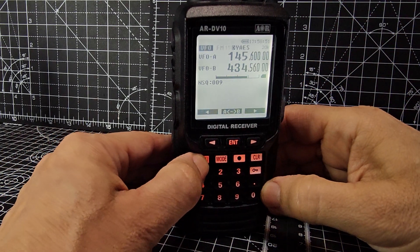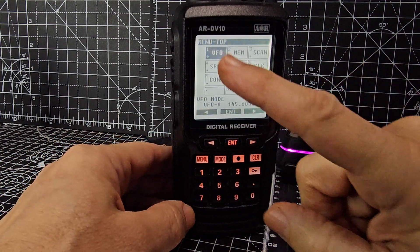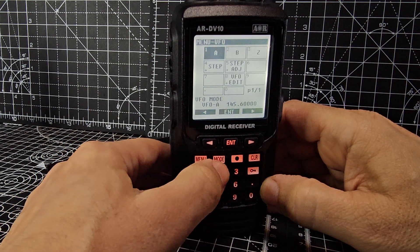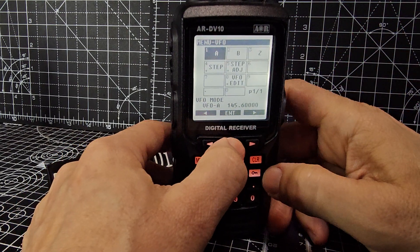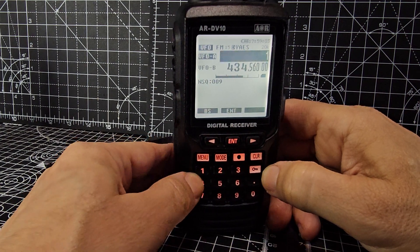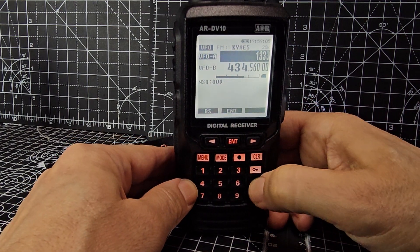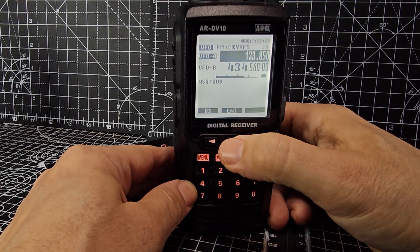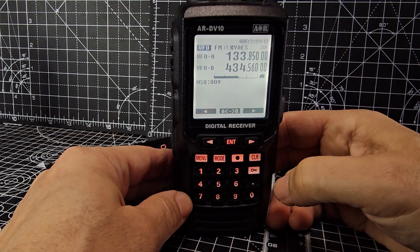So what you do is go menu and make sure you select VFO which is number one, or you could press enter, and then we're going to do VFO A, enter. Then type in an airband frequency, so we're going to go 133.850, enter. Okay, that's airband.